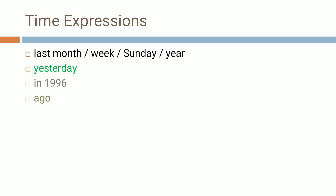Now, which are these time expressions? The time expressions are: last month, last week, last Sunday, last year. 'Yesterday' is a very common word which we use in simple past tense sentences. 'In 1996', 'ago' — these are some timing words or time expressions which we use when we want to make sentences with past tense.